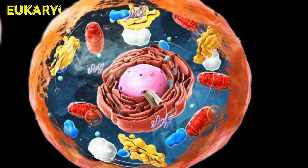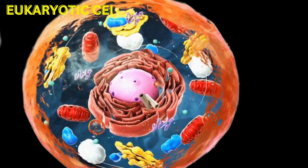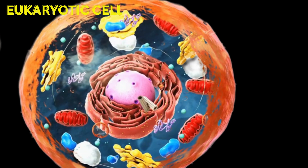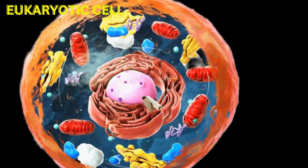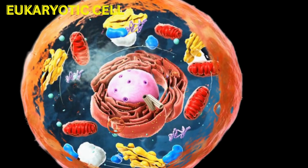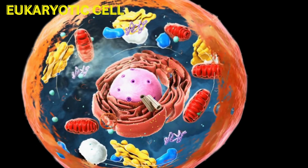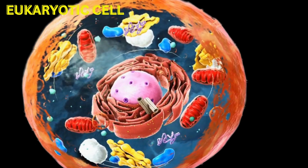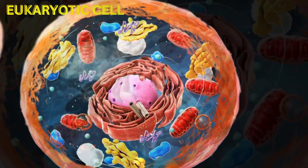Eukaryotic cells are complex cells that contain membrane-bound organelles and a nucleus enclosed within a nuclear envelope. Here's an overview of some of the major organelles found in a eukaryotic cell and their functions.